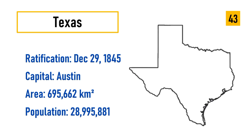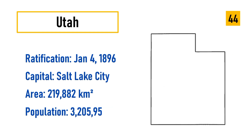Number 43: Texas, ratification December 29, 1845, capital Austin, area 695,662 square kilometers, population 28,995,881. Number 44: Utah, ratification January 4, 1896, capital Salt Lake City, area 219,882 square kilometers, population 3,205,958.